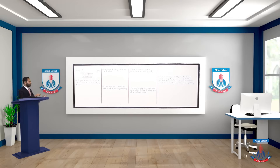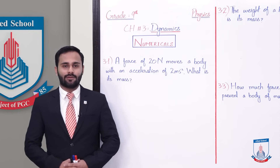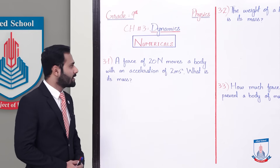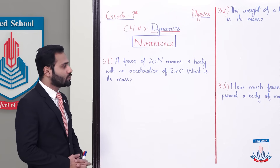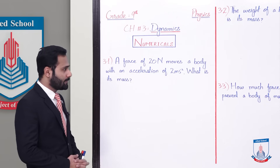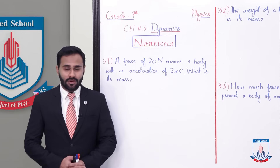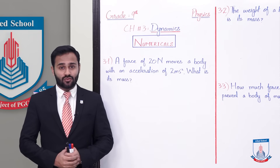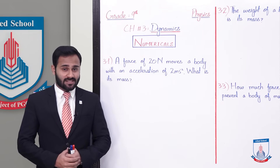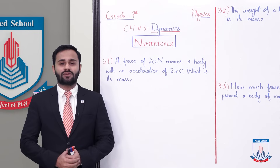Chapter number 3: Dynamics. Numerical 3.1 — a force of 20 newton moves a body with an acceleration of 2 meter per second square. What is its mass? So 20 newton ki force ek body ko move kar rahi hai with 2 meter per second square acceleration ke saath. Us body ka mass kya hoga? Ye aapne find out karna hai.